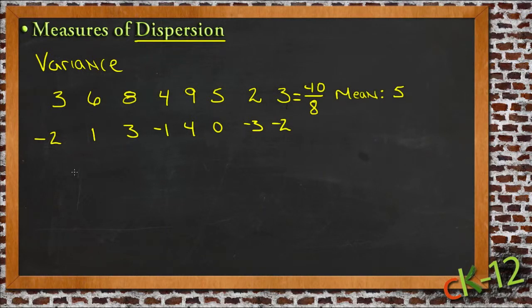So one thing we can do that makes that a little more obvious is to square the values, because if I square these values, then the ones that are farthest away from the middle really get exaggerated. Let me show you what I mean by that. If I take each of these values here and just square them, negative two becomes four, one stays one, three becomes nine, negative one becomes one, four jumps up to sixteen, zero stays zero, negative three becomes nine, and negative two becomes four.